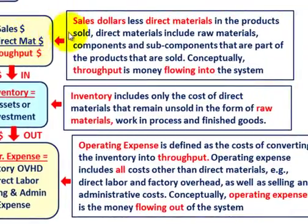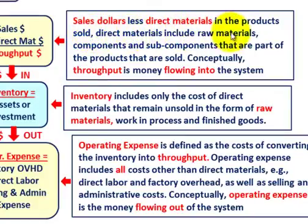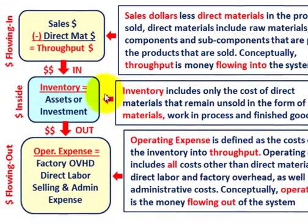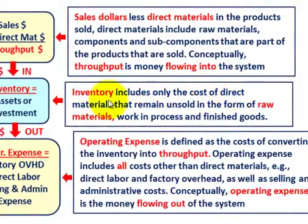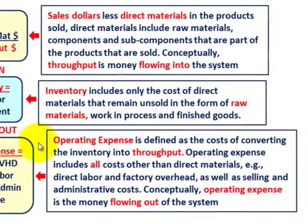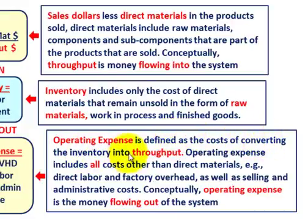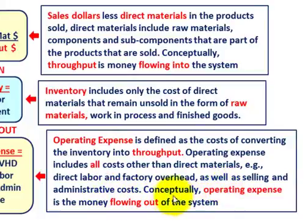Sales less direct materials means sales dollars minus the direct materials in products sold. Direct materials include raw materials, components, and sub-components. Conceptually, throughput is money flowing into the system. Inventory includes only the cost of direct materials that remain unsold — raw materials, work in process, and finished goods. Operating expense is the cost of converting inventory into throughput, including all costs other than direct materials: direct labor, factory overhead, and selling and administrative costs.